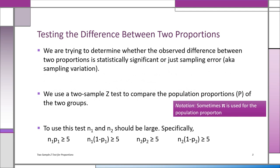We're going to be using the z as a way of determining whether the observed difference between the two proportions is significant or just sampling error.